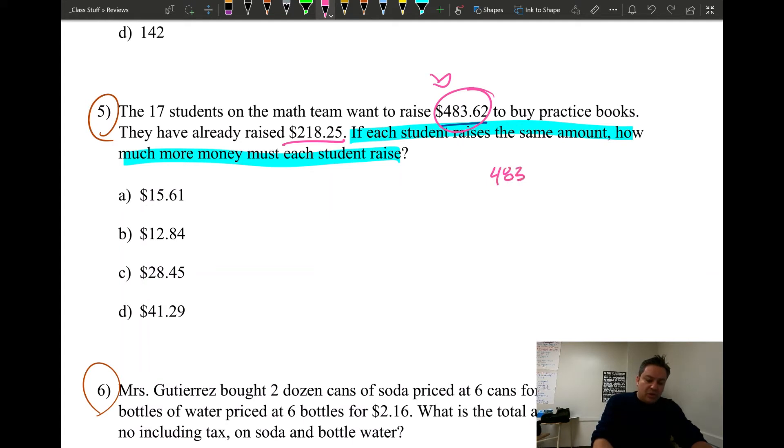Now there's two things that we know. We know how much they want to raise, and we already know that they have already raised some money, so they don't need to raise this amount. They need to raise the difference. So first step is to find out how much money is still necessary. And to do that, all we gotta do is subtract: $483.62 minus $218.25. When you subtract, you get 37 cents and this is gonna be 5, that's going to be 6, and $265.37.